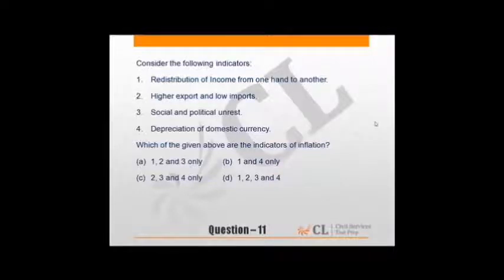Consider the following indicators of inflation. Redistribution of income from one hand to another - yes, it happens. Some start to gain profit, some gather losses. This is an indicator of inflation. Higher exports and low imports - rather, it's the opposite, lower exports and higher imports. Social and political unrest is not directly related as an indicator of inflation. Depreciation of domestic currency - yes, when imports increase, there is depreciation of domestic currency. The value of money also decreases. So 1 and 4 stand correct. A logical question you can solve using logic.